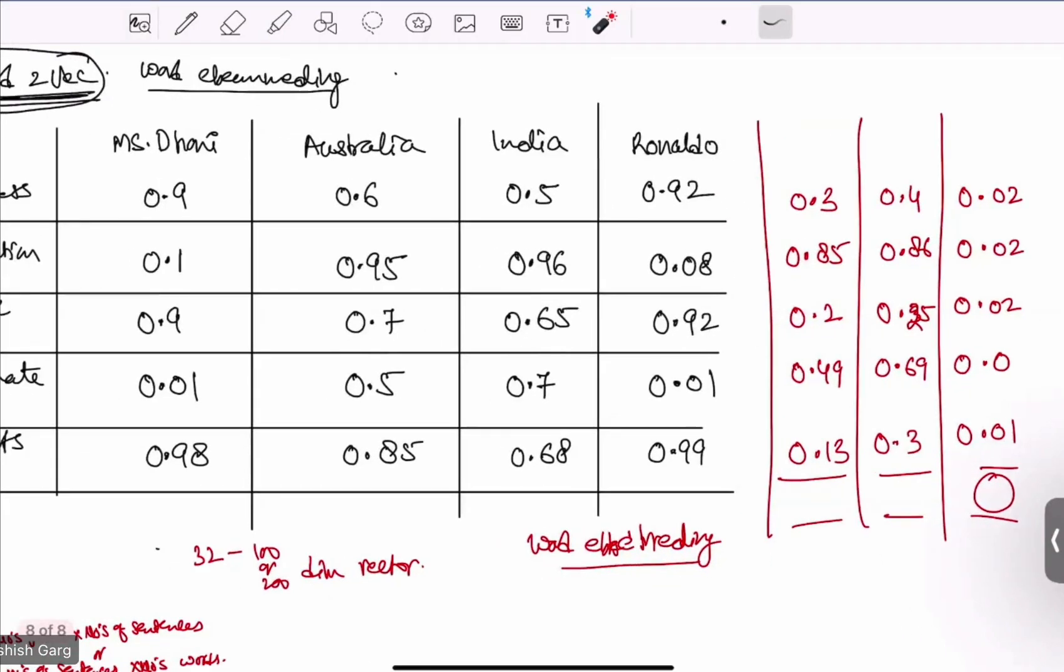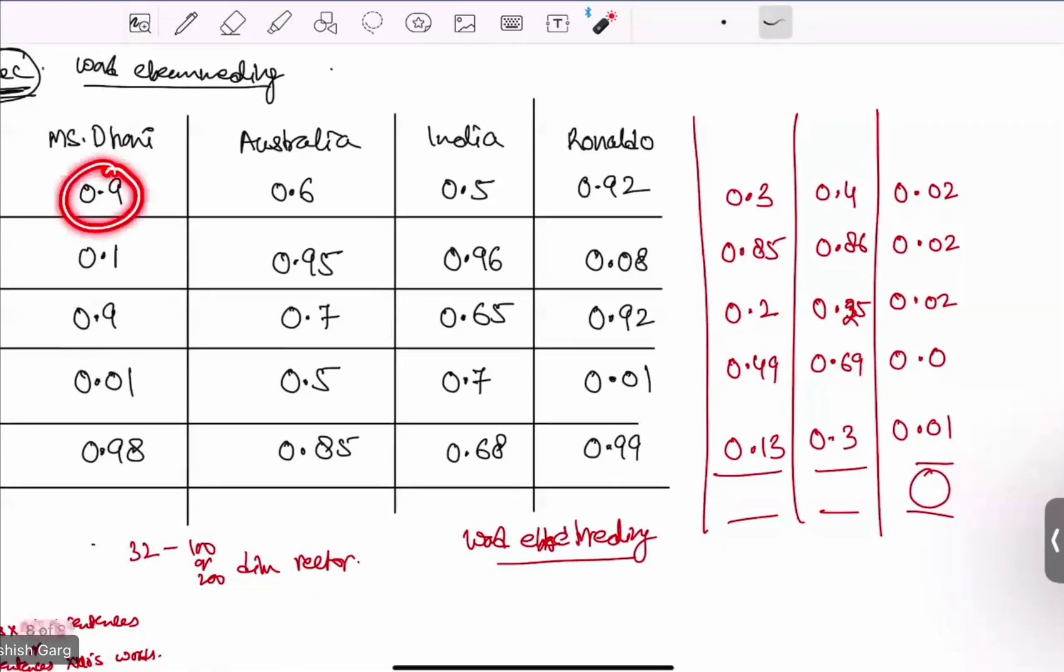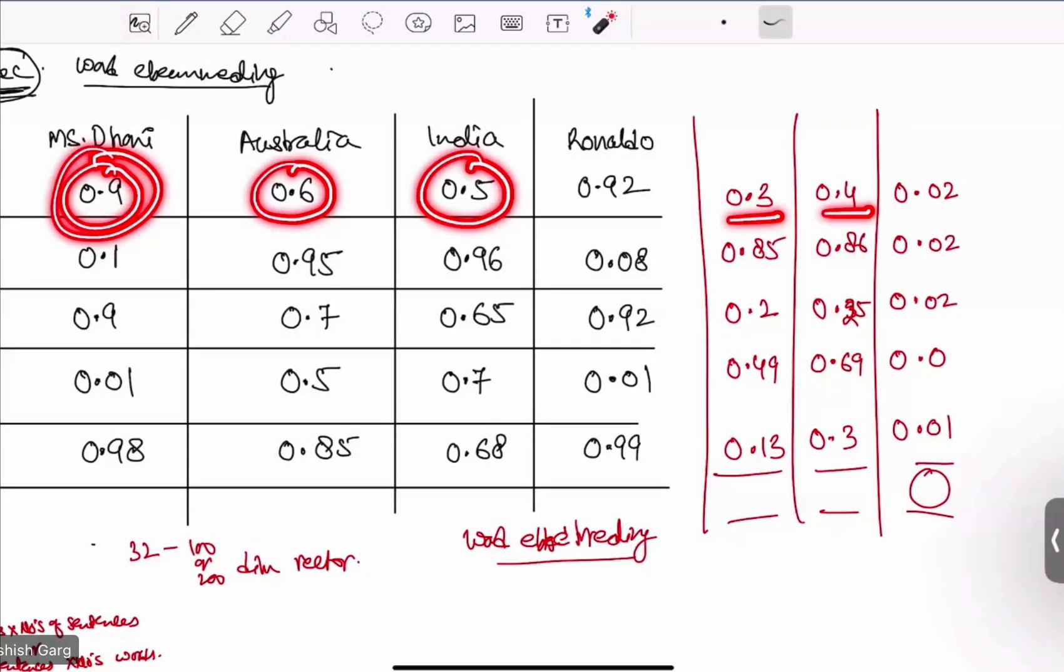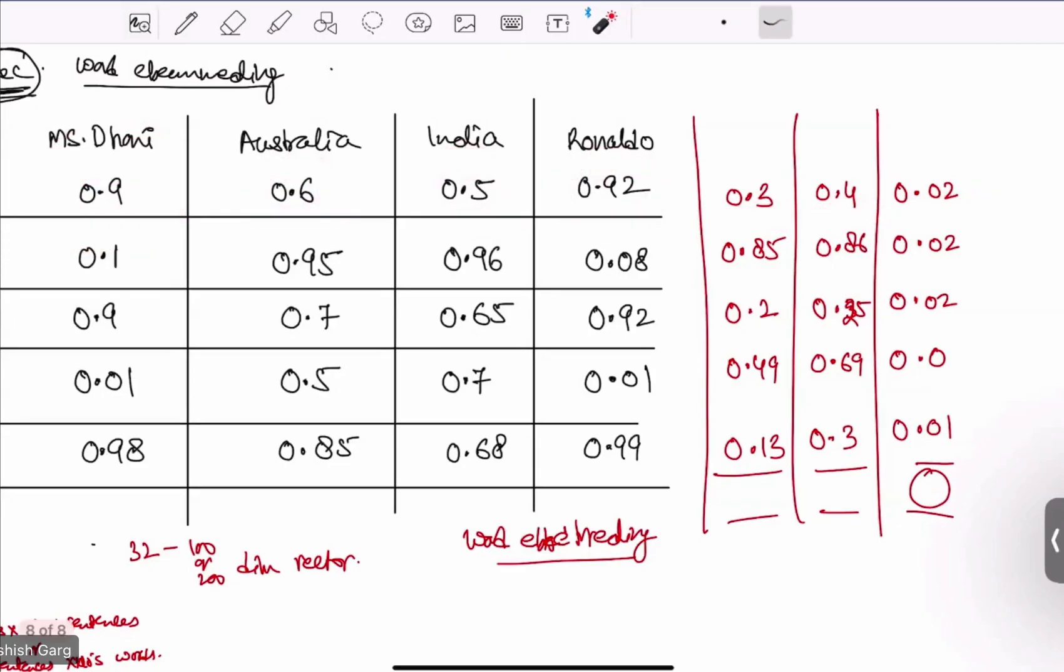See here. Now here 0.9 minus 0.6 is 0.3. 0.9 minus 0.5 is 0.4. 0.9 minus 0.92 is this. For every other value, 0.1 minus this is this. Here we are finding the modulus. We are not finding the value in negative or positive manner. Absolute value we are interested in. So we have got every value after doing subtraction.